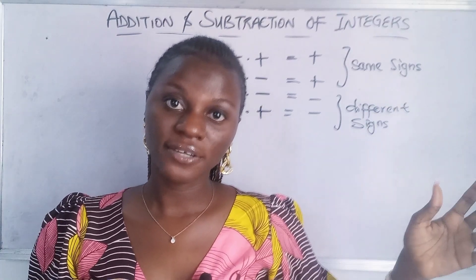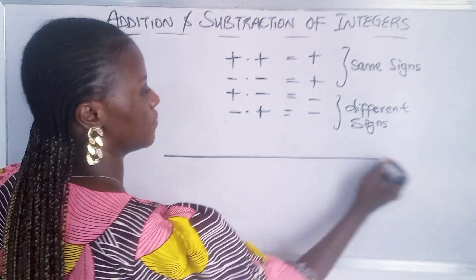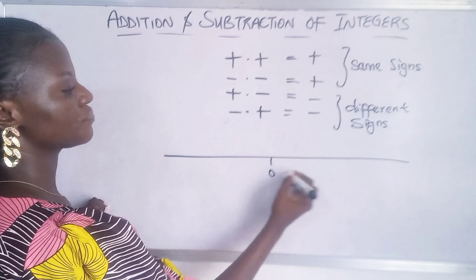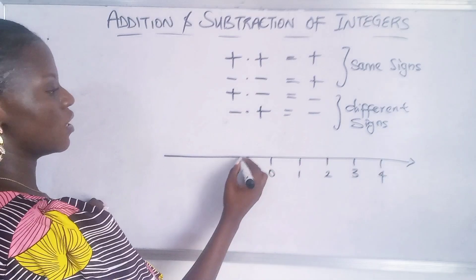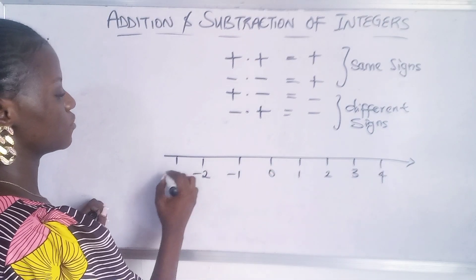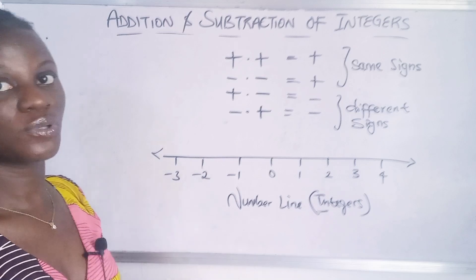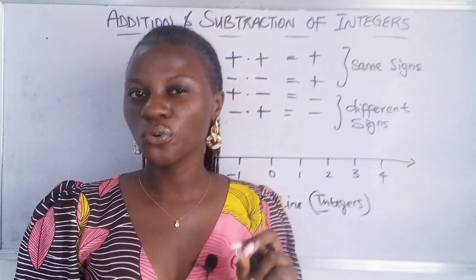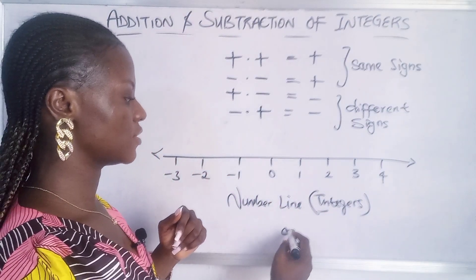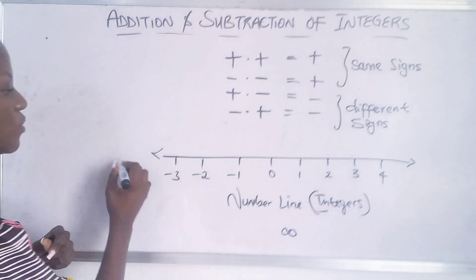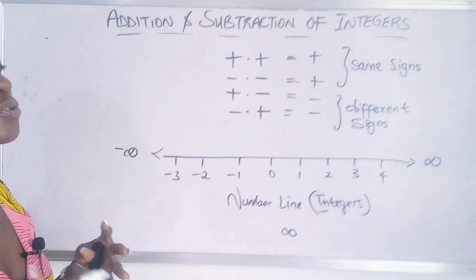The number line includes zero, one, two, three, four and it continues. On the left-hand side you have minus one, minus two, minus three. This number line keeps going — we call the ends infinity. We'll discuss infinity in another class, but on one end we refer to it as negative infinity and on the other as positive infinity.